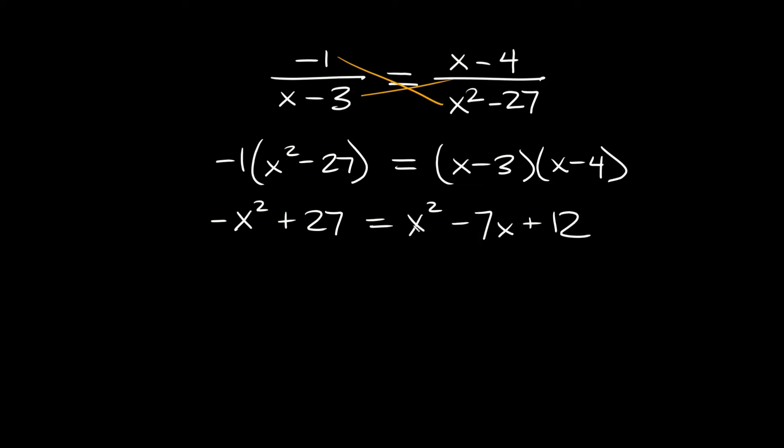You can see we have this trinomial in quadratic form. Let's move all these terms to the right so we can combine everything and set it equal to zero. We have negative x squared, so let's add x squared to both sides, and this positive 27 we're going to subtract 27 from both sides.